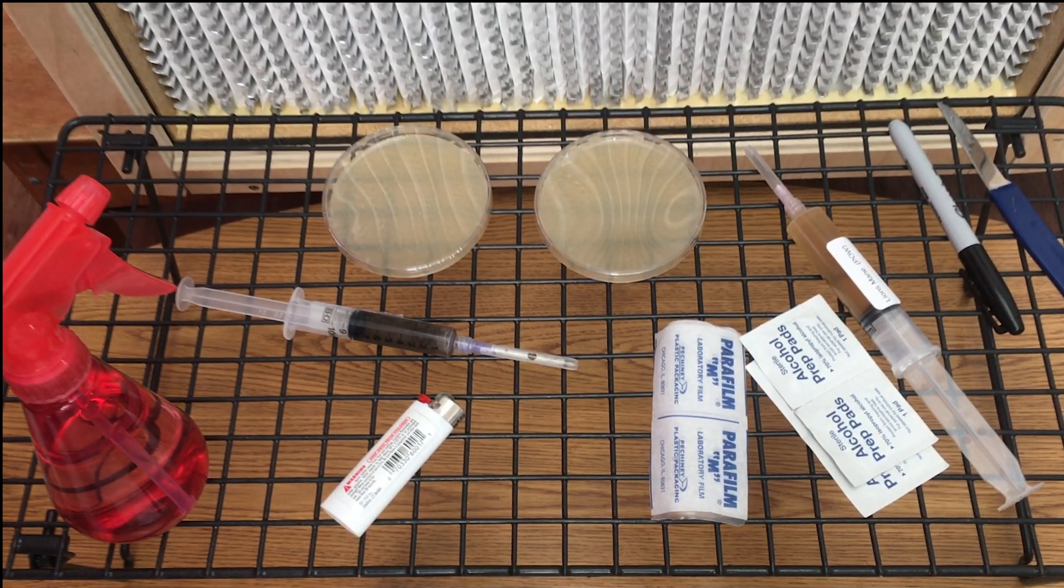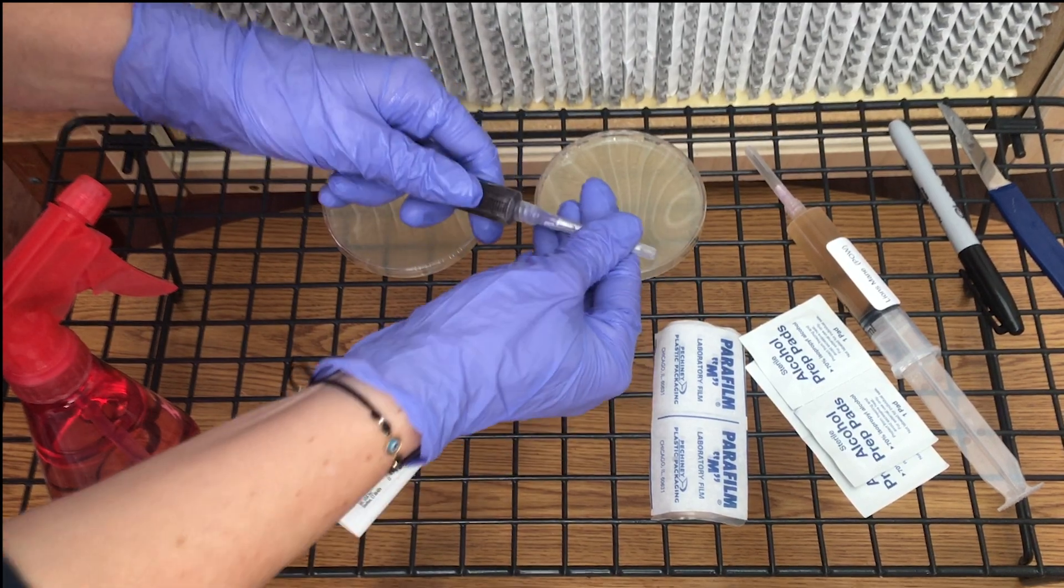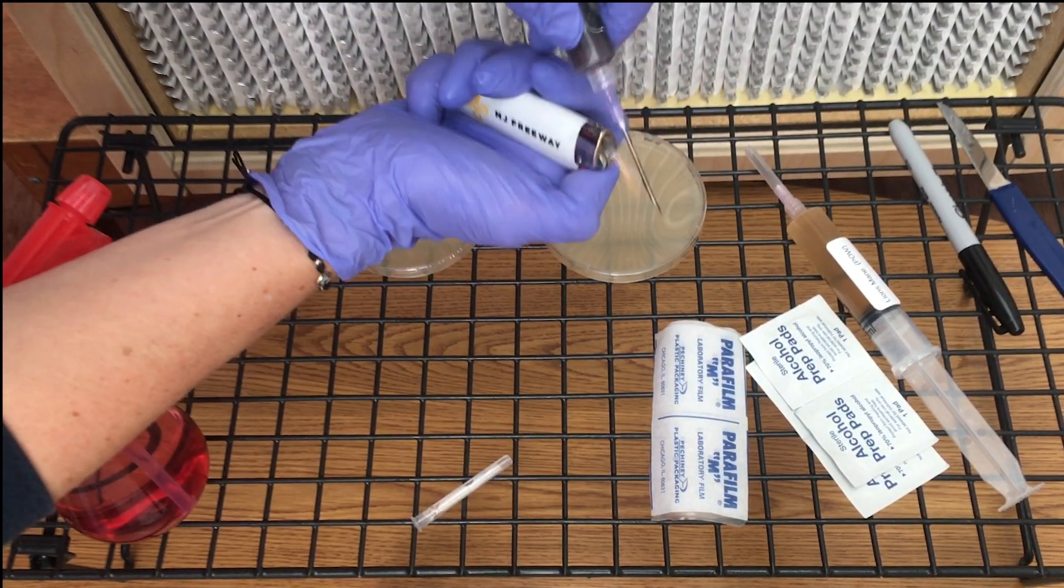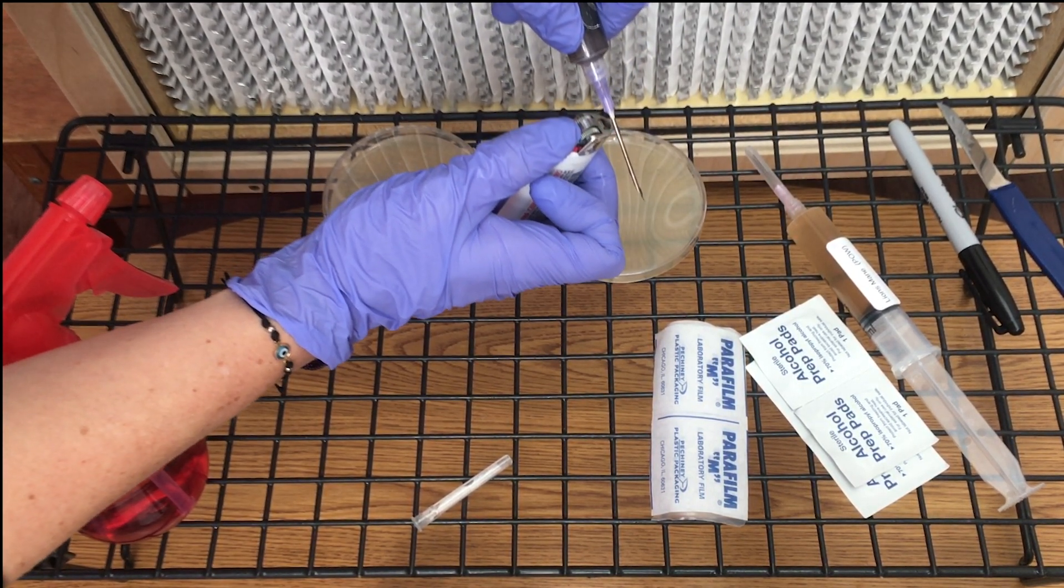Now we are ready to inoculate our agar. First, shake up your spore syringe until the spores start to break apart. Then flame the needle for 30 seconds until the needle starts to become black from the soot.